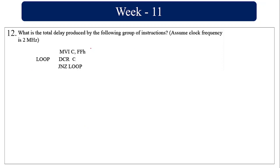Now find the total delay produced by this group of instructions. For MVI C, the opcode fetch plus memory read for fetching FFh gives 4 + 3 = 7 T-states. This is executed once. The loop body runs 255 times since the decimal value of FFh is 255.